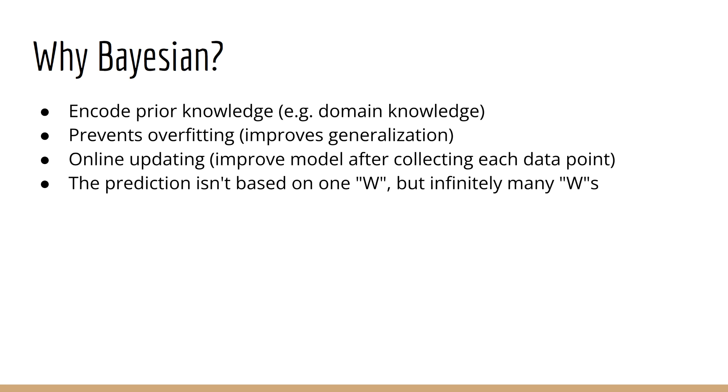And because we have a distribution over W, we can also infer things about our model. For example, we might find that the weight for one of the inputs has a very large variance. Our model is thus more uncertain about its value.